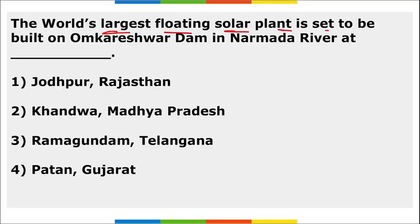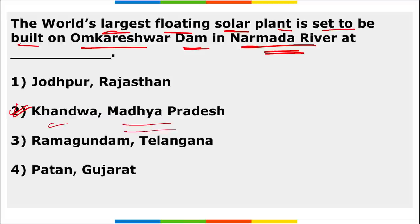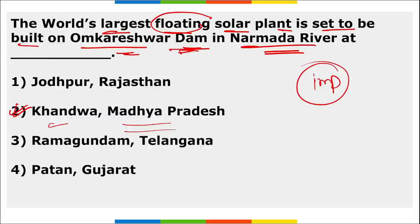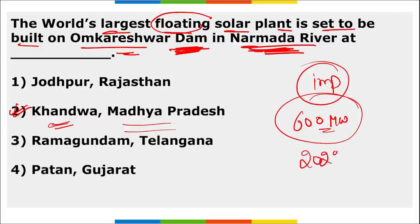The world's largest floating solar plant is set to be built on the Omkareshwar Dam on the Narmada River, located in the Khandwa district of Madhya Pradesh. This will generate around 600 megawatts of renewable energy by 2022-2023 and is estimated to be built at a cost of ₹3,000 crore rupees.